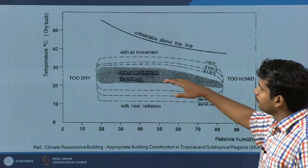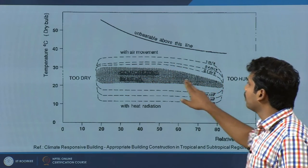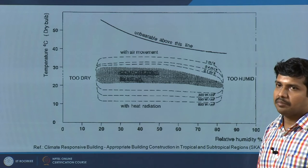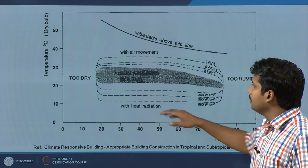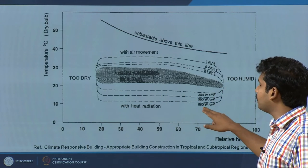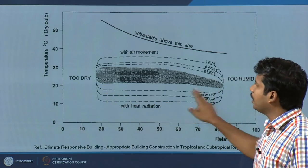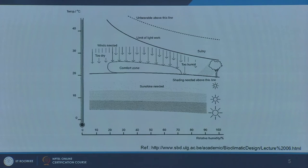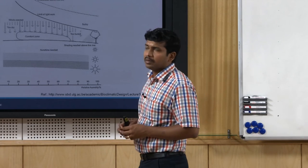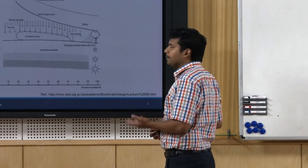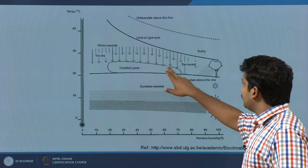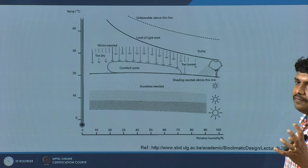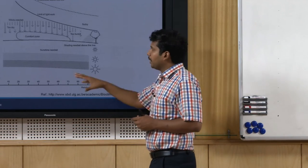With 1 meter per second air velocity you can be comfortable within this boundary. As temperatures fall, heat radiation — from sun, artificial or mechanical heaters — helps maintain comfort; for example, 800 watts per square meter at a specific temperature keeps you comfortable. Beyond a certain point it becomes unbearable. This fine-tuned bioclimatic chart was proposed by Victor Olgyay. Above a shading line you need shading for the building — you can use trees or artificial shades. This chart is primarily for the outdoor environment.